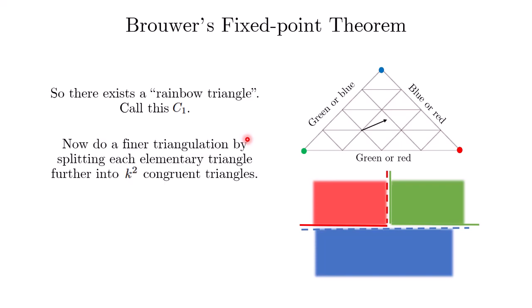Now we replace this triangulation with a finer triangulation where each elementary triangle is further split into k² congruent triangles. We get a finer triangulation, repeat the same coloring scheme, and by Sperner's lemma again, we have a smaller elementary triangle that is a rainbow triangle. We call this C₂.